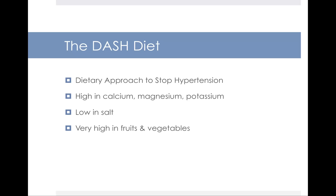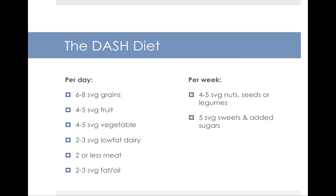One approach to managing hypertension is the DASH diet — Dietary Approaches to Stop Hypertension. It's a diet high in calcium, magnesium, and potassium, low in salt, and very high in fruits and vegetables: 8 to 10 servings per day, meaning 4 to 5 servings of fruit and 4 to 5 servings of vegetables daily. The idea is that if you spend most of your time eating fruits and vegetables — high in potassium, low in sodium — you won't have room for high-sodium foods.